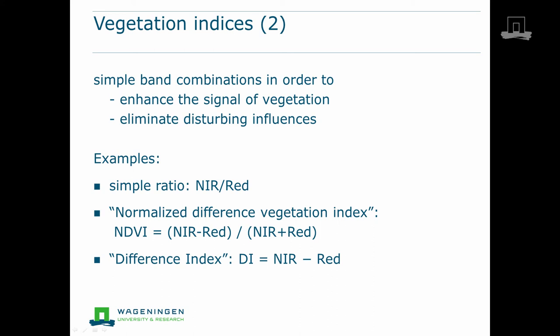Finally, simply the difference between near infrared and red reflectance can be considered an interesting vegetation index. For both wet soil and dry soil, this index yields a value of zero, meaning indeed no vegetation.